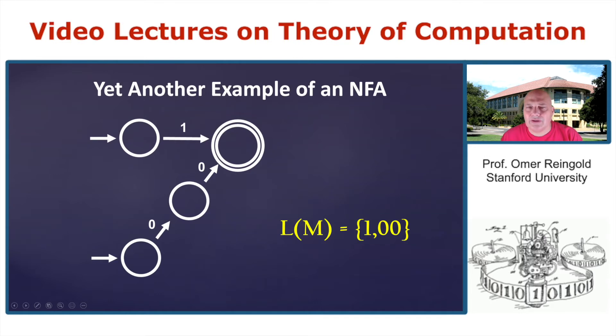And so for example, what happens when you look at the string one, zero? Regardless of which state you start with, there is no path that follows one, zero. In particular, there is no accepting path follow one, zero. So these are the only strings that correspond to accepting path.